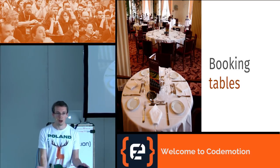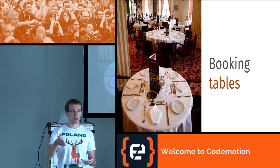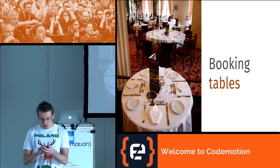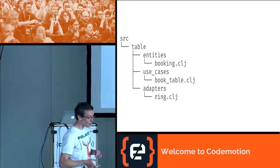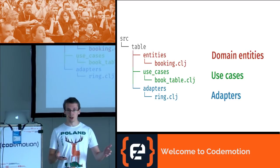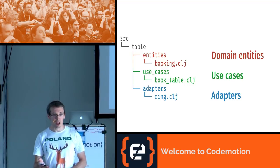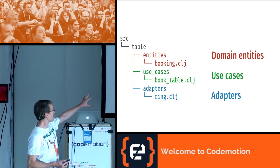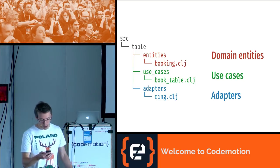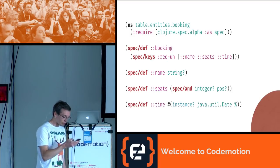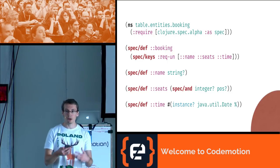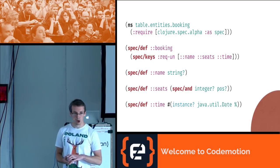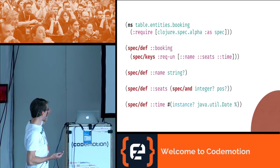Let's build from the very beginning a simple web app which has a single resource to which you can POST a booking to get a table booked in a restaurant. We're going to follow a standard structure of a Clojure project. I divided it into three files which follow exactly the split you saw: we have our domain entity — a booking — a use case that is booking a table, and an adapter which translates this internal world into HTTP. Let's start from the middle: we have our booking entity. I'm using Clojure spec to specify what is a valid booking.